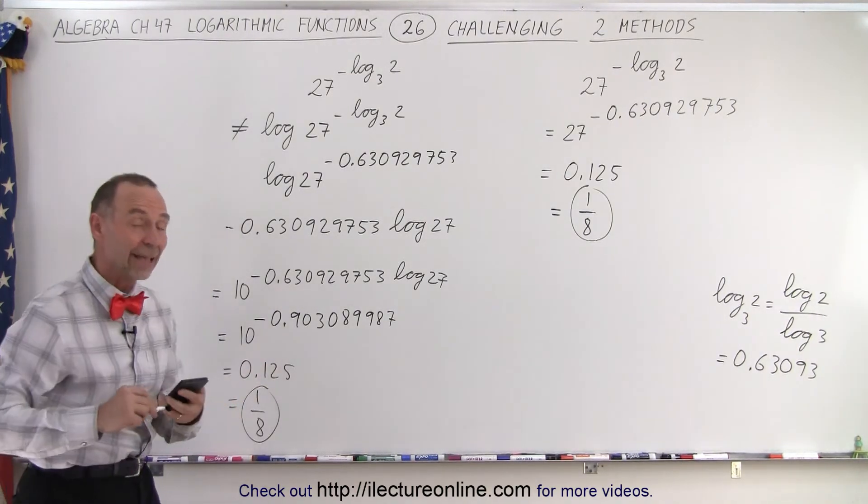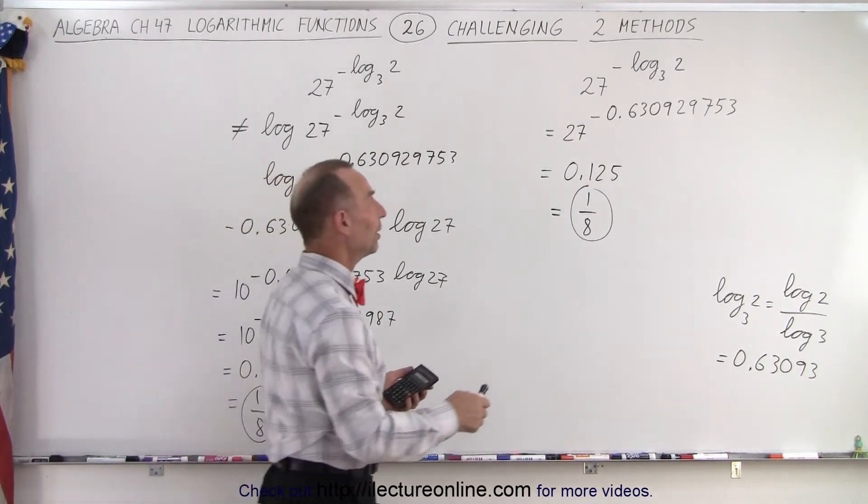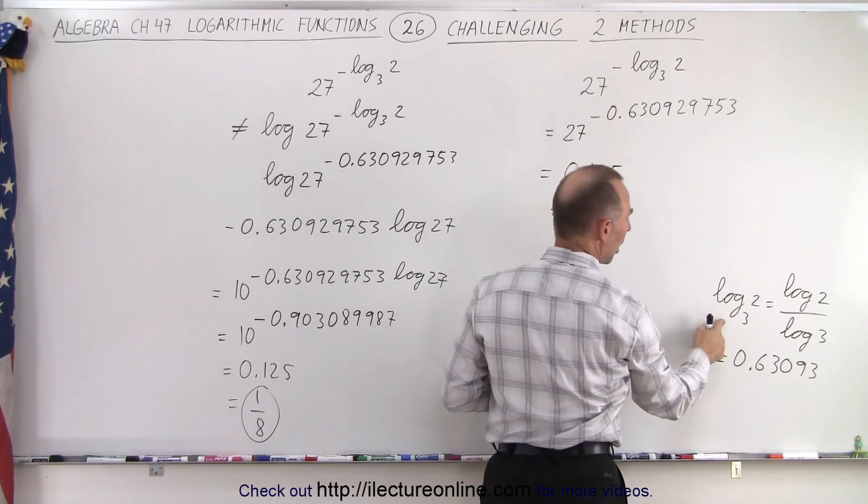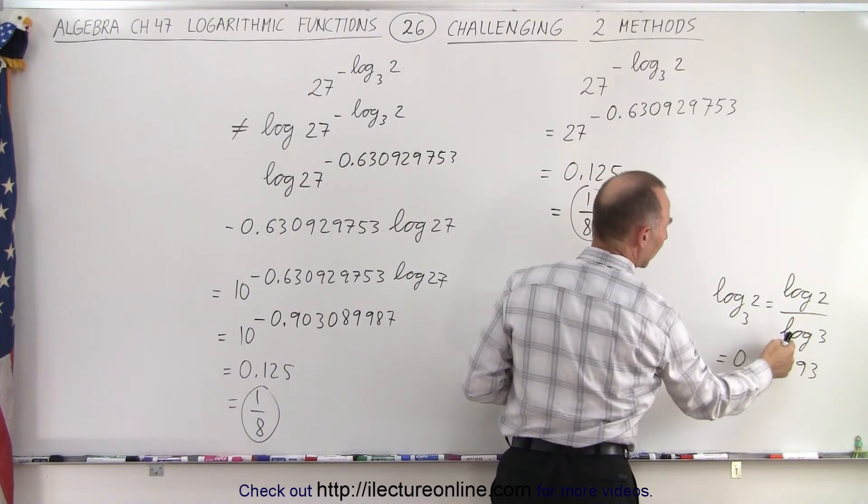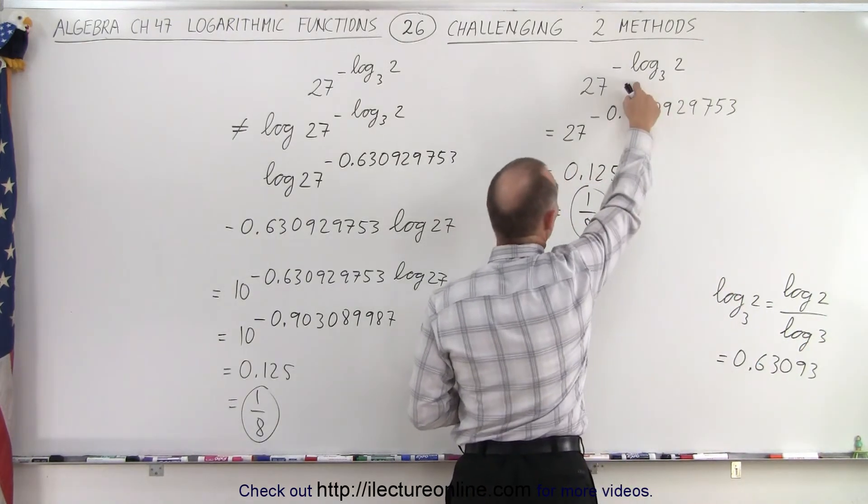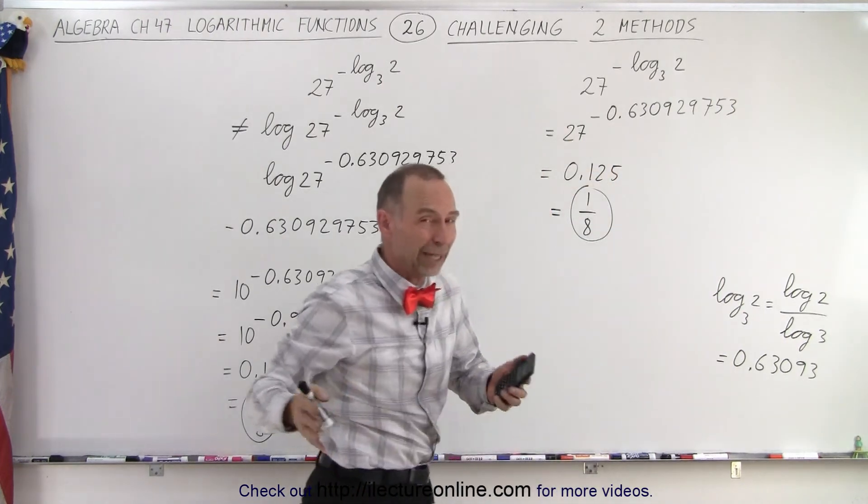And you notice, we get the exact same answer. So notice the difference. Here, we simply converted the log base 3 of 2 to the log base 10 of 2 divided by log base 10 of the old base, to get that exponent. So the exponent then changes to this number right here. And then we simply plug that into our calculator, we get 1 over 8.